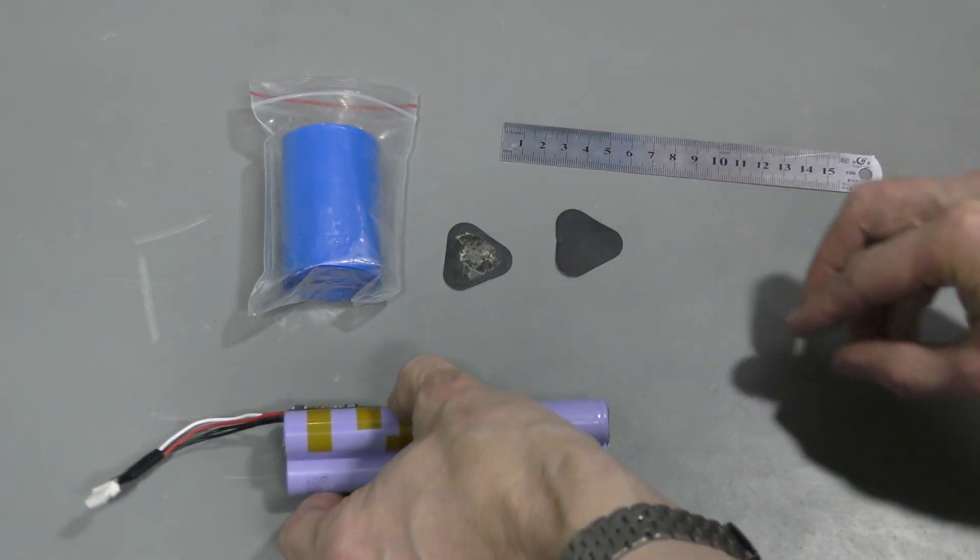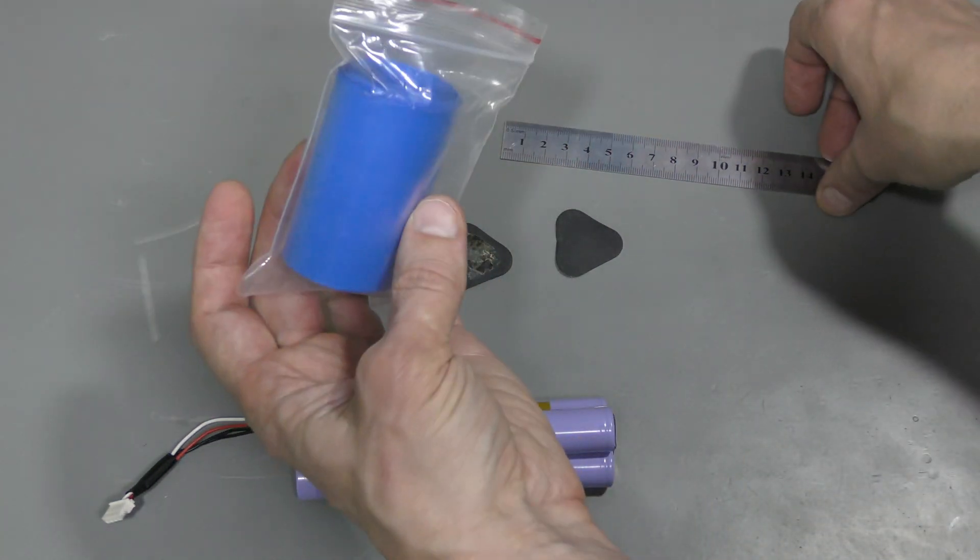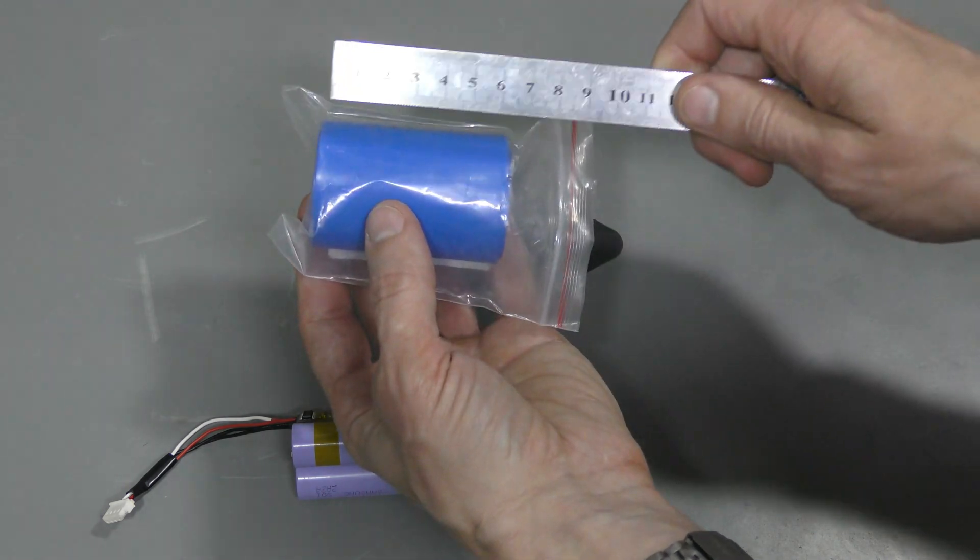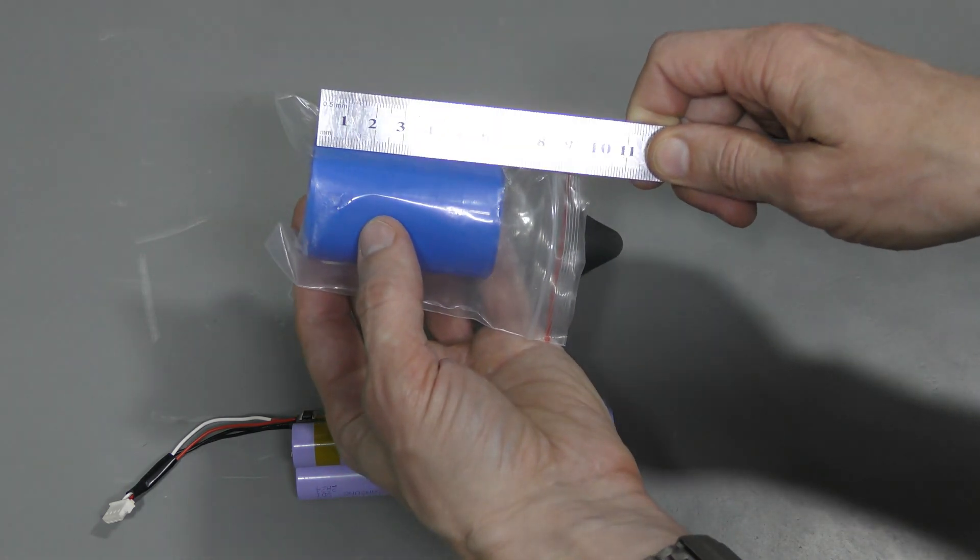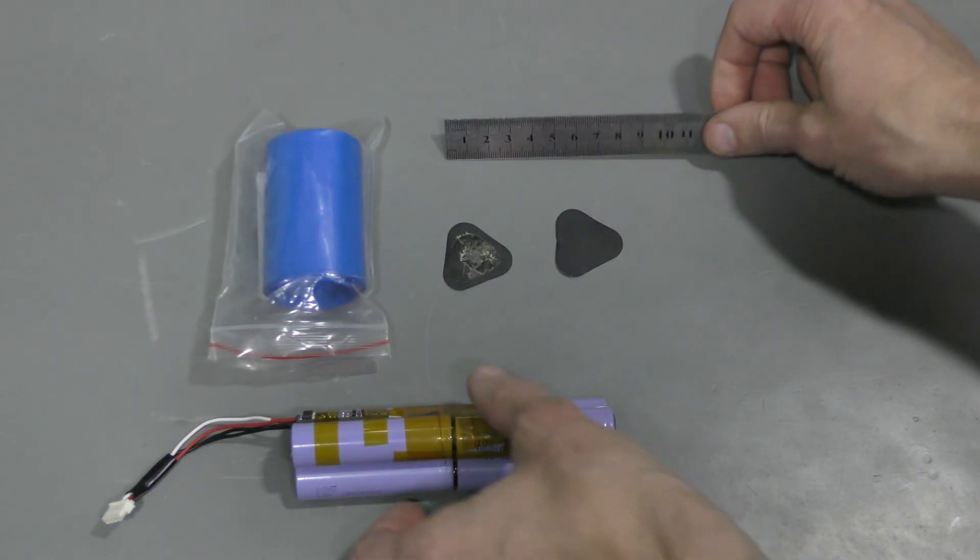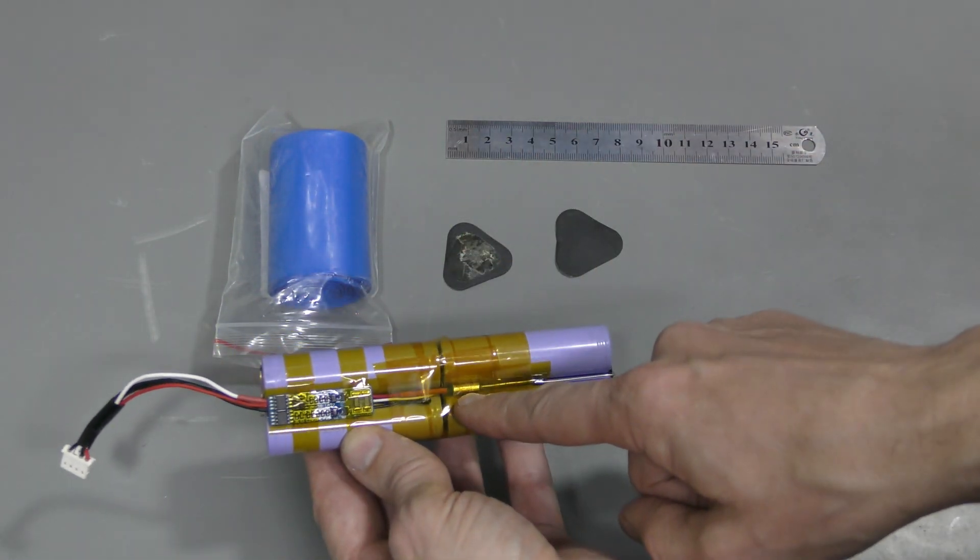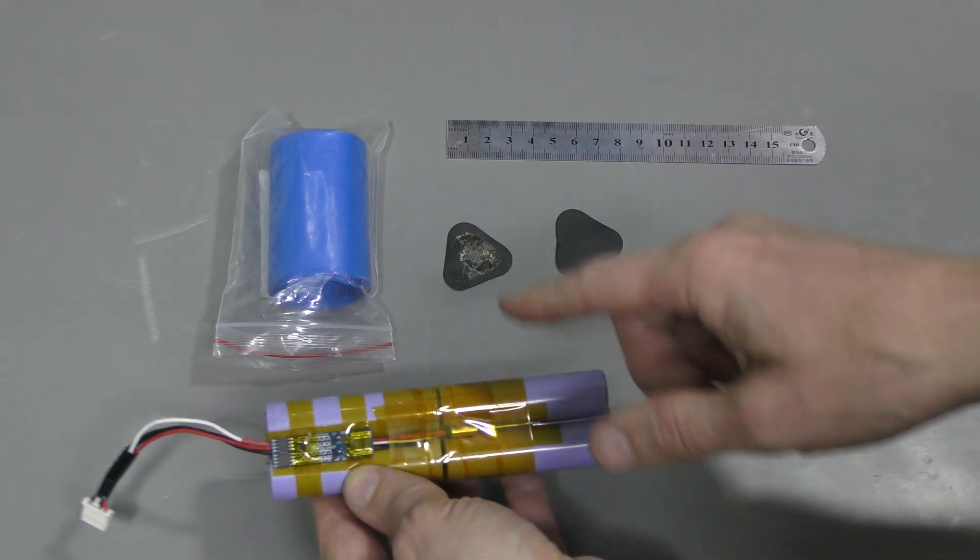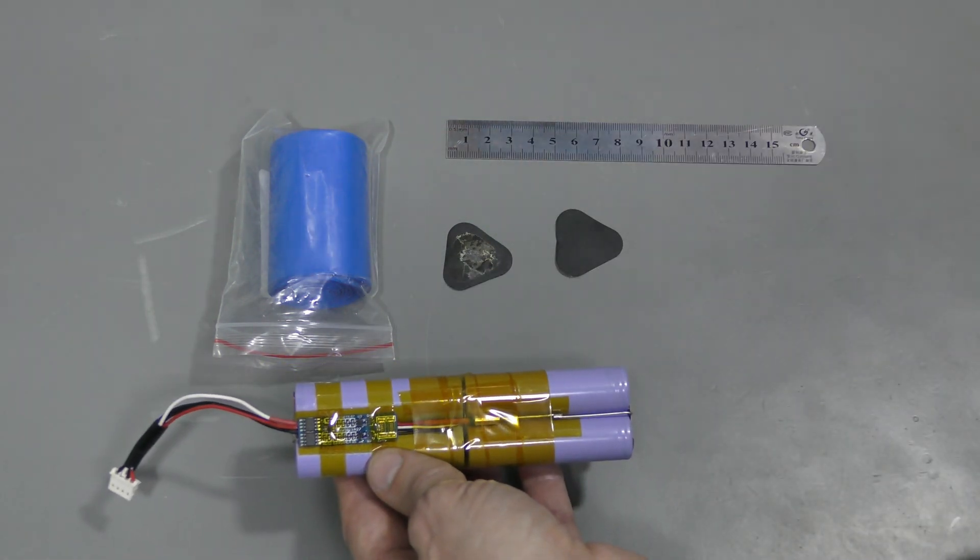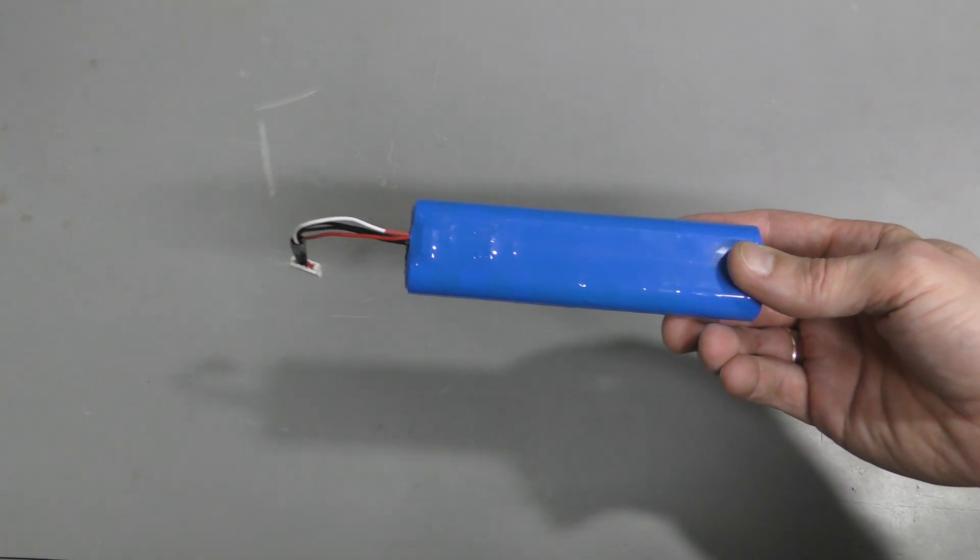I'm going to use this PVC heat shrink, 65 millimeters. And here I put a few pieces of Kapton tape over this thermal fuse. I hope not to melt it in the process of shrinking. Check this out. Beautiful!